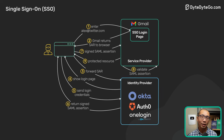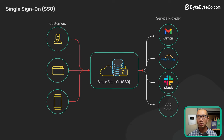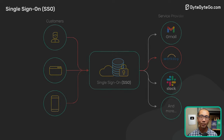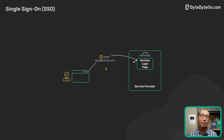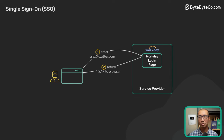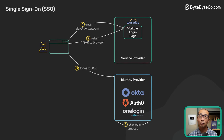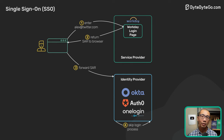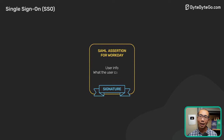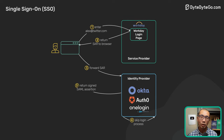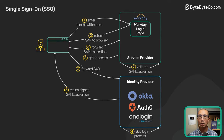The service provider returns the protected resource to the browser based on what the user is allowed to access as specified in the SAML assertion. This completes the walkthrough of a basic SSO login flow. Now let's see what happens when the user navigates to another SSO-integrated application, say Workday. The Workday server detects the work domain and sends a SAML authentication request back to the browser. The browser again redirects the user to the identity provider. Since the user has already logged in, it skips the login process and instead generates a SAML assertion for Workday, detailing what the user can access there. The assertion is returned to the browser, forwarded to Workday, which validates it and grants the user access accordingly.